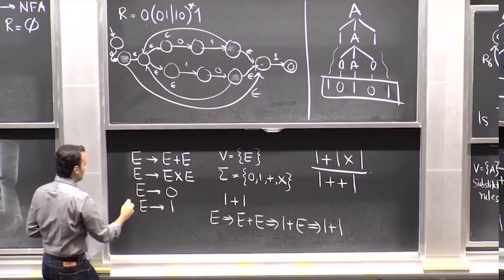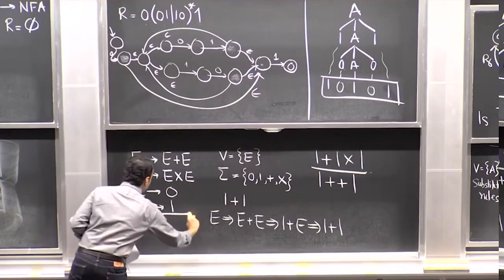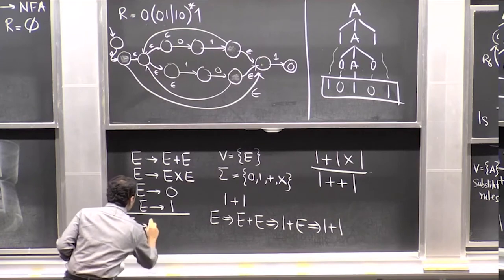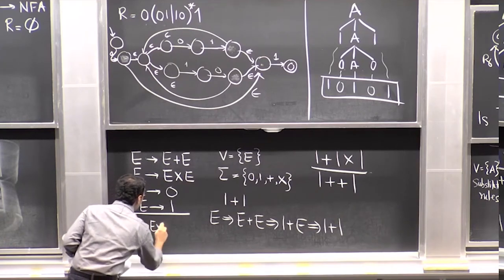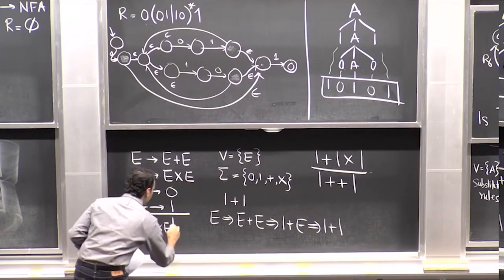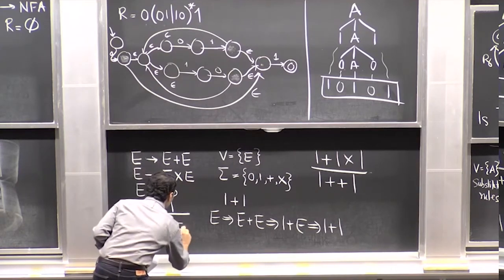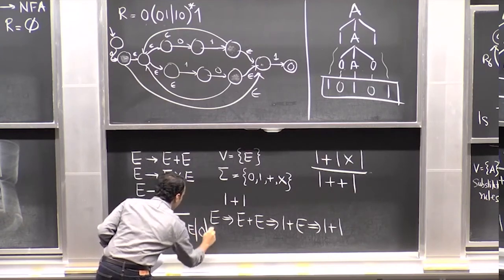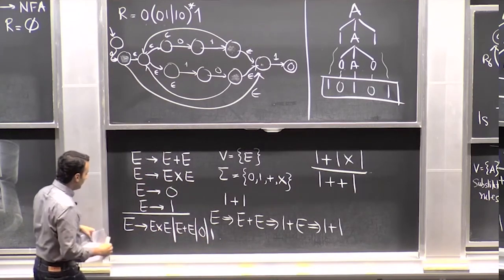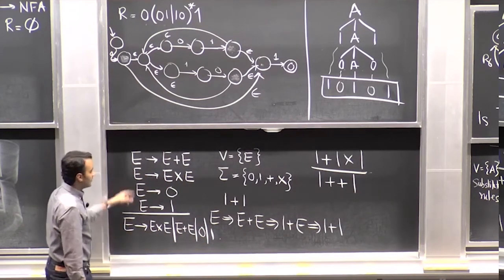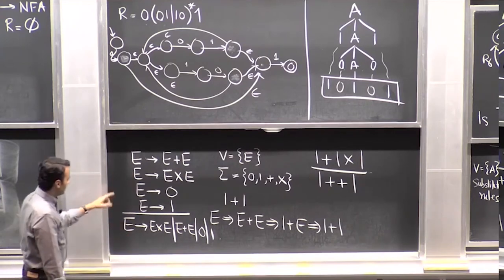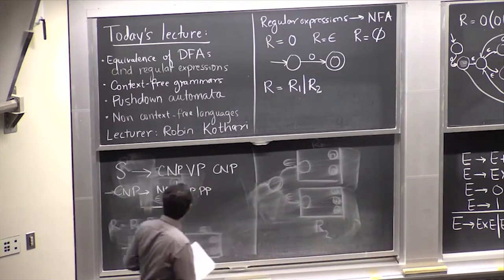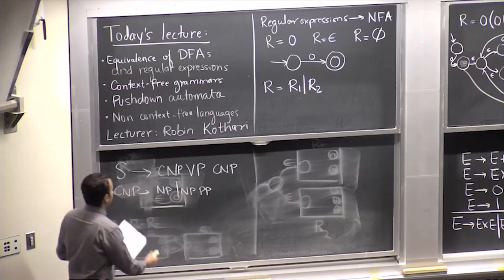It's nice to combine multiple rules into one using the 'or' notation. So instead of writing separate rules, you write: E can go to E times E, or E plus E, or zero, or one. This is a condensed way of writing the system of rules — they're completely equivalent, just more concise.